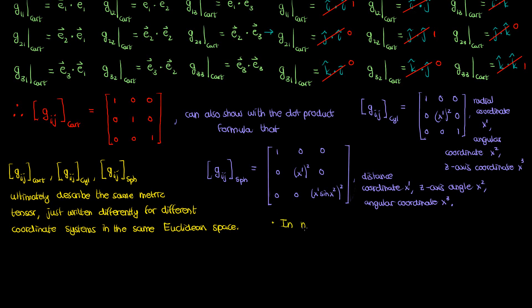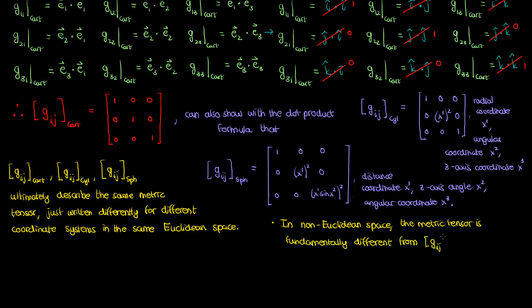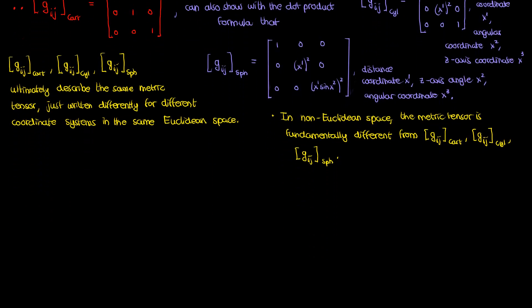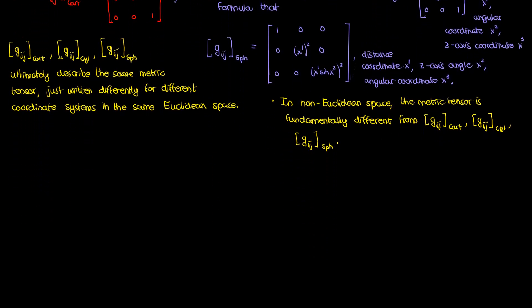But if I looked at the metric tensor in a non-Euclidean space — say at the surface of a sphere calculating distances along that sphere, or in special relativity in Minkowski space — in these different non-Euclidean spaces my metric tensor would be fundamentally different from the Euclidean metric tensors in Cartesian, cylindrical, and spherical coordinates. If I'm confined to Euclidean space, different coordinate systems will not fundamentally change my metric tensor, but being in a different space will. If this distinction between space and coordinate system is unclear, feel free to let me know in the comments.